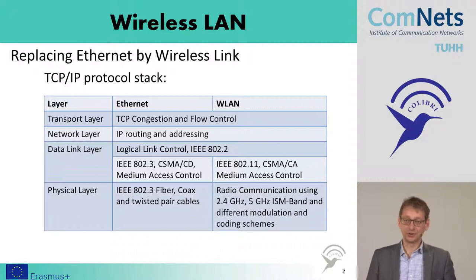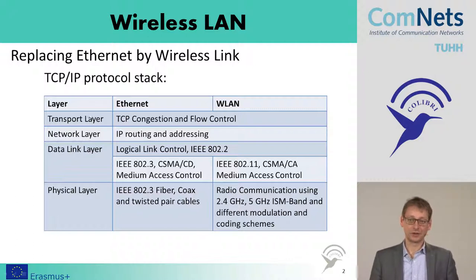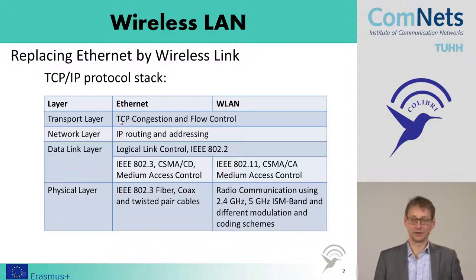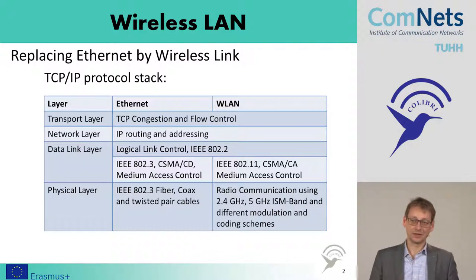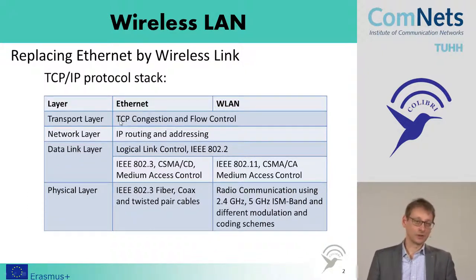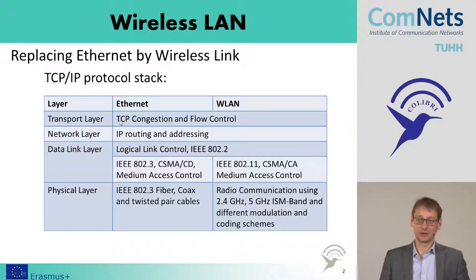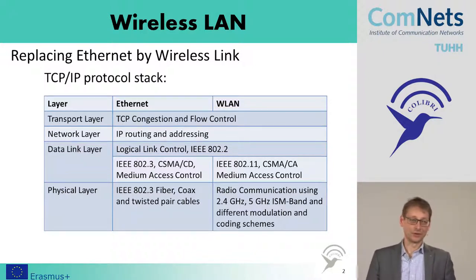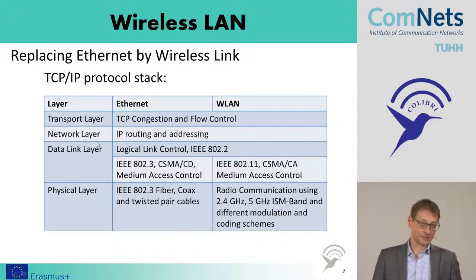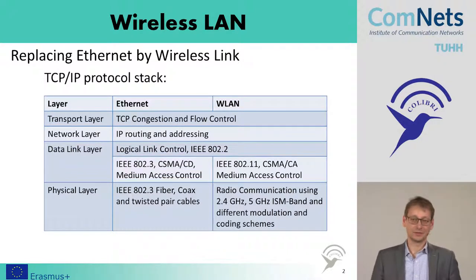If you look at the protocol stack of Ethernet, we see we have the transport and network layers: TCP and IP. TCP, the transport layer, is responsible for end-to-end reliability, congestion control, and flow control. The network layer is responsible for routing and addressing. In the data link layer, we only talk about the next hop, and here we replace the wired hop by a wireless hop.